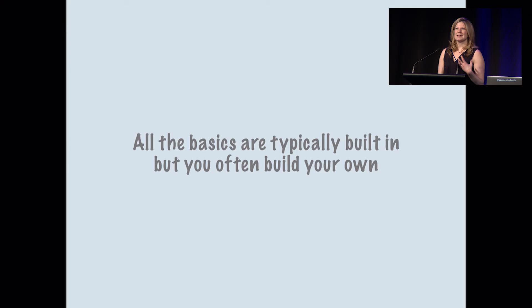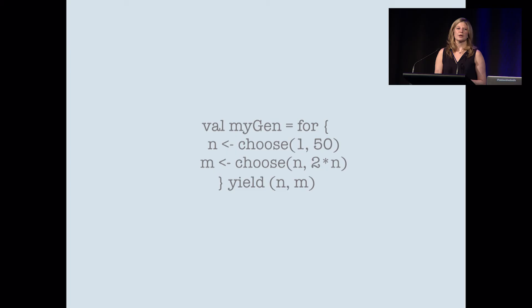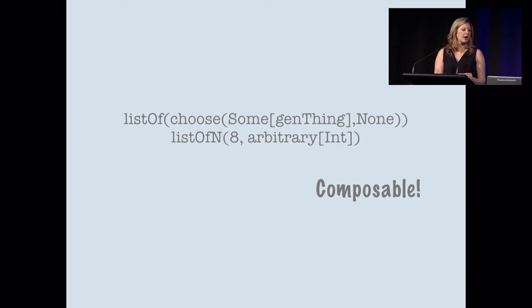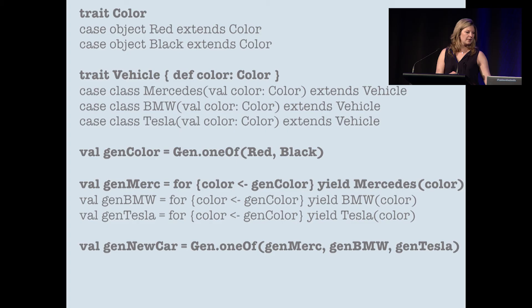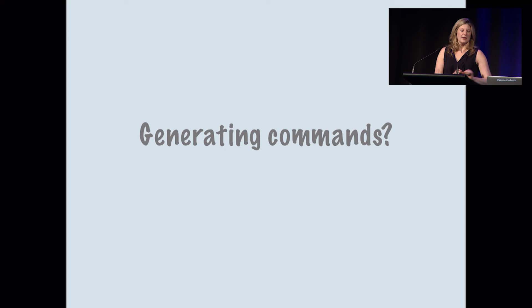The next part is generation. A lot of us have already written code to generate data in the past — writing a generator is just writing code. In this instance, we're returning a tuple with n and two times n. The cool thing about generators is that they are composable — here we've got a list and we're choosing between two option types: some of something we're generating, or none. In the second line, we're generating a list of eight arbitrary integers. Here's something even more complex in Scala — we're generating cars that have a color, ensuring every car has a type and a color.